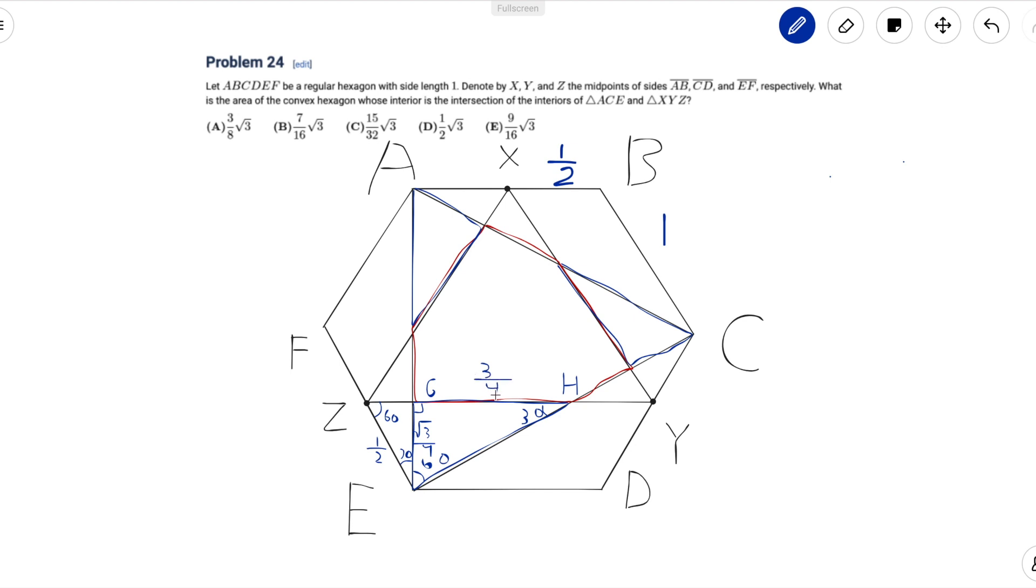Now we can just use area equals 1 half base times height on triangle EGH. So 1 half times root 3 over 4 times 3 over 4. That's just 3 root 3 over 32.